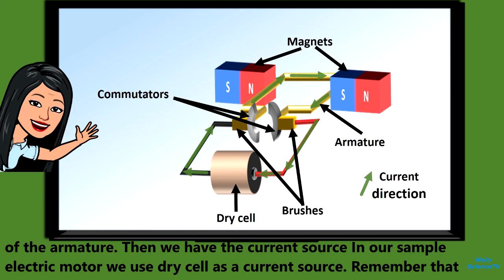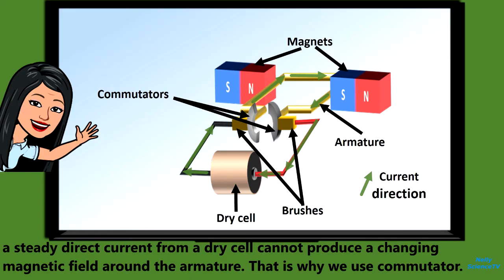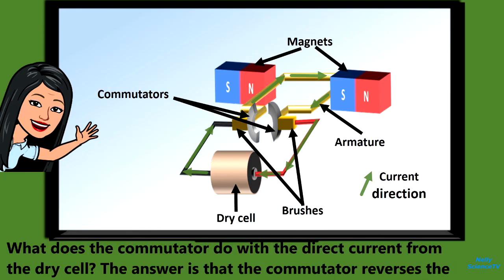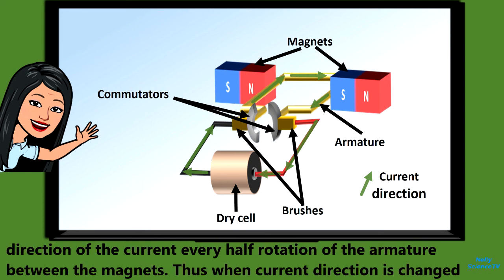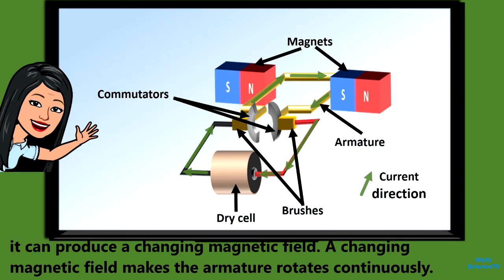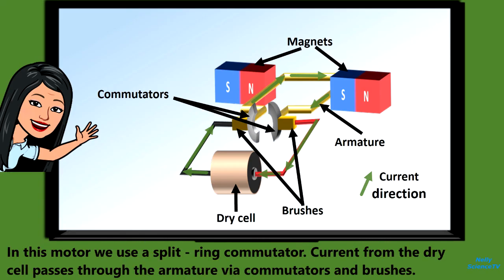Then we have the current source. In our sample electric motor, we use a dry cell as a current source. Remember that a steady direct current from a dry cell cannot produce a changing magnetic field around the armature. That is why we use a commutator. The commutator reverses the direction of the current every half rotation of the armature between the magnets. Thus, when the current direction is changed, it can produce a changing magnetic field. A changing magnetic field makes the armature rotate continuously. In this motor, we use a split-ring commutator. Current from the dry cell passes through the armature via commutators and brushes.